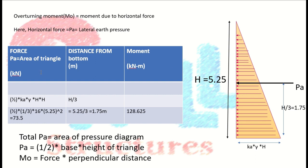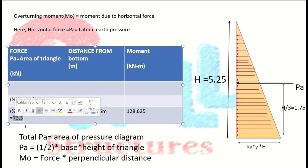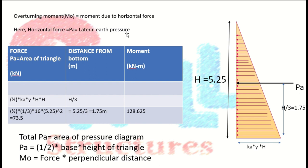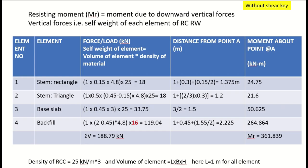I have prepared a table with columns for force, distance from the bottom, and moment. Since the force is horizontal, we need the perpendicular distance to calculate moment (M = F × d). Pa = ½ × Ka × γ × H² = ½ × (1/3) × 16 × 5.25² = 73.5 kN. The distance from the bottom is H/3 = 5.25/3 = 1.75 meters. The overturning moment is 73.5 × 1.75 = 128.625 kN·m.